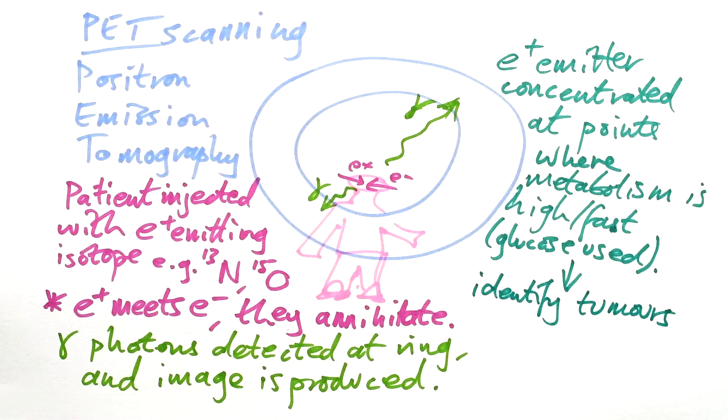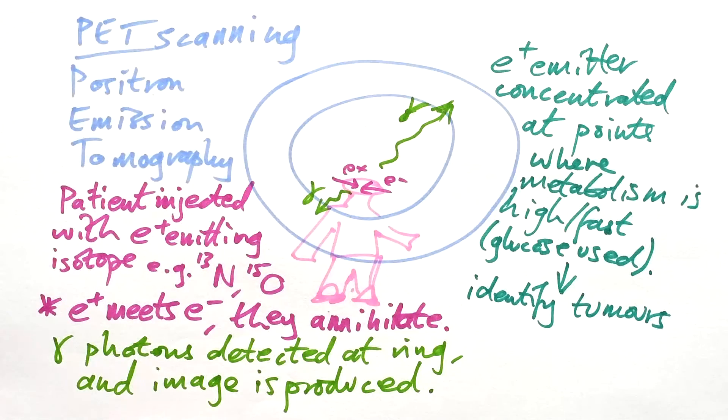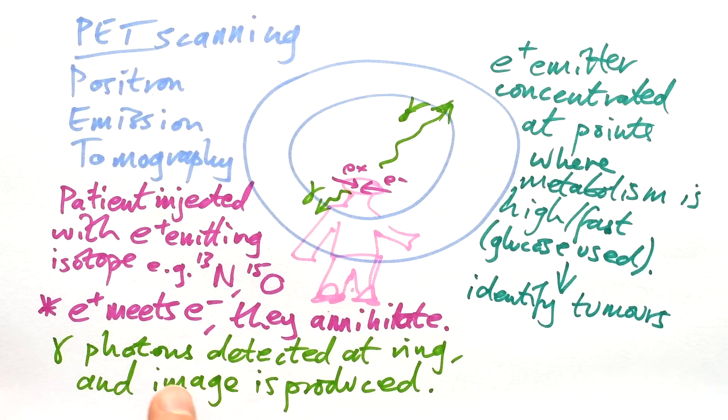If you see a bright spot where lots of gamma photons are coming from in your body, that's because there's lots of metabolism going on there. And so chances are that cancer has formed there. Once you've identified that there might be a tumour in your body, well, you could perform surgery, but that's dangerous and it might not get rid of it completely. So what else can you do?